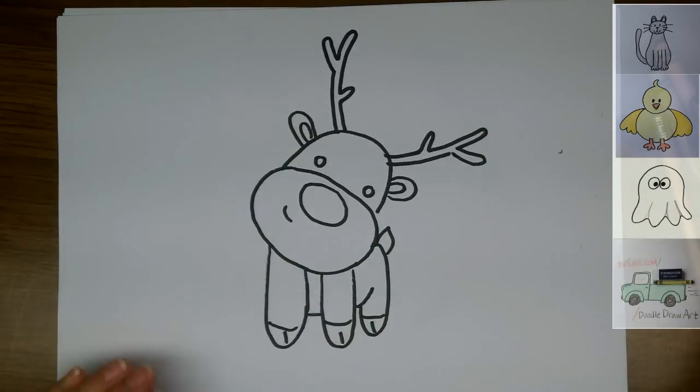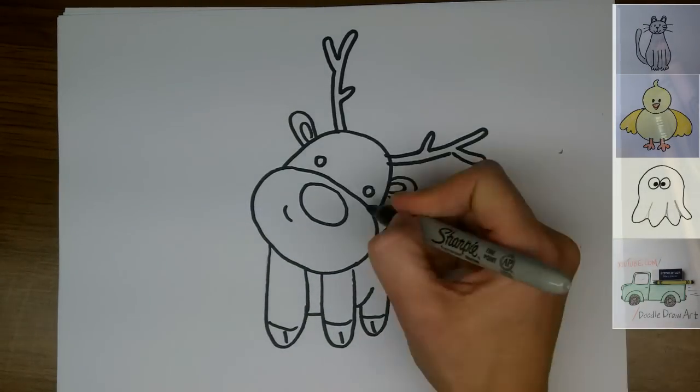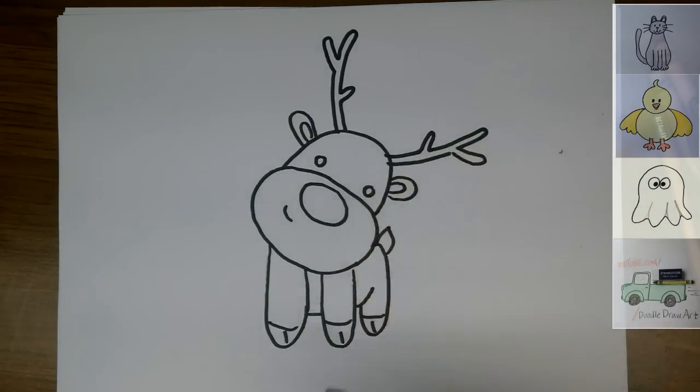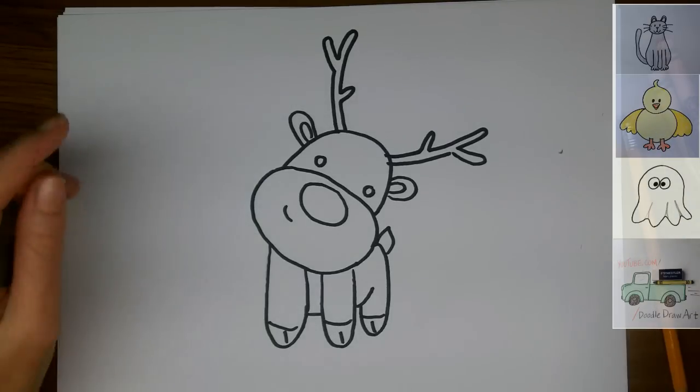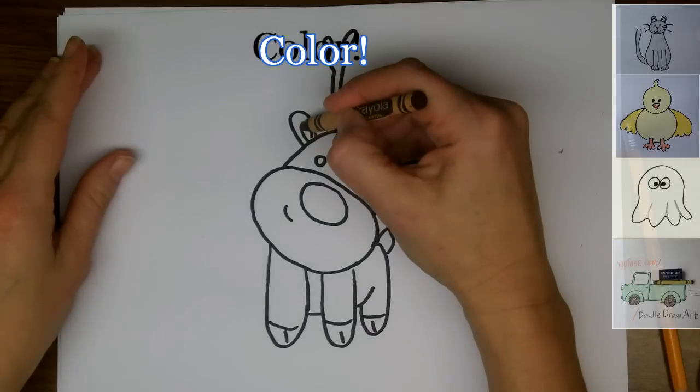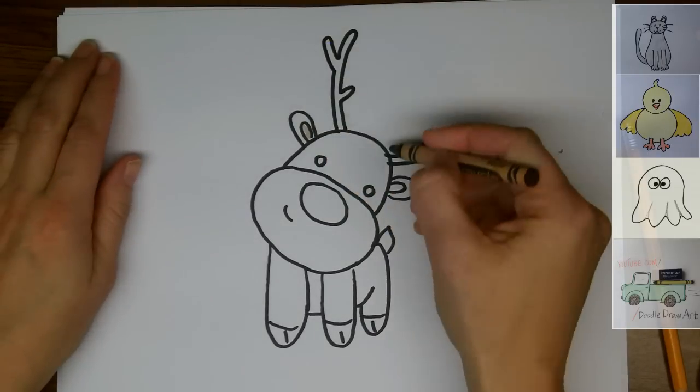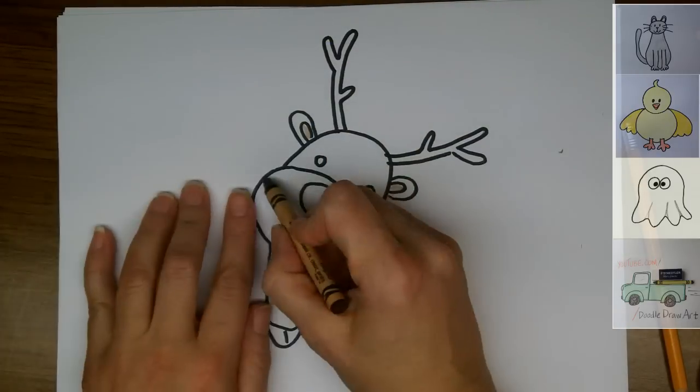The way I could see your drawing is if you're on Instagram or Facebook. You could post your picture and then tag me in it so that I can see it. All right. We're ready to color our reindeer. You can use any colors you like, but I'm going to use lots of brown.